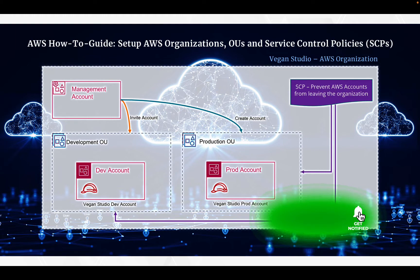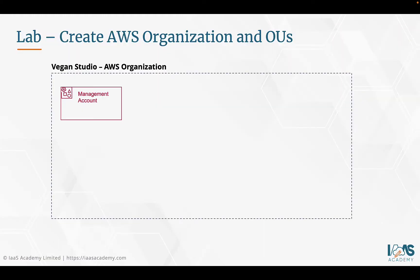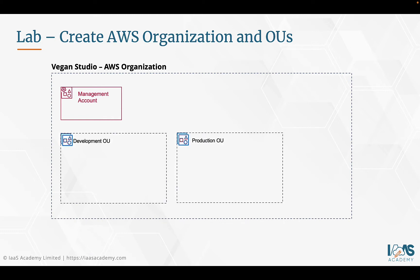Let's take a look at the architecture that we're going to build. Based on the previous section of this course, you already have in place the management account and a second development account. Within the management account, we're going to build our AWS organization service. With this in place, we're then going to set up two organization units: the development organization unit and the production organization unit.